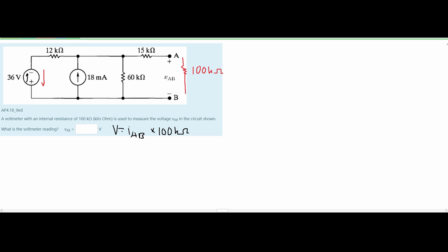Using source transformation, this 36 volts we are going to rewrite as a current and this 12 kilo ohm resistor is going to not be in series but in parallel with it.